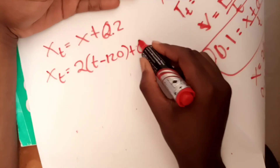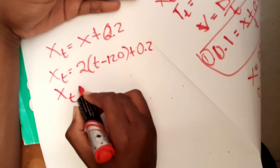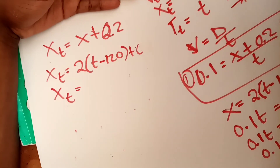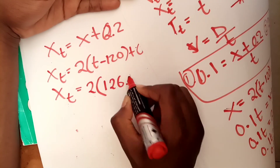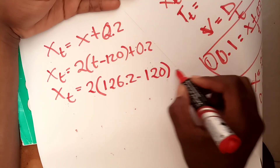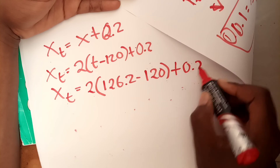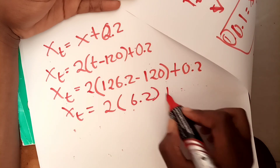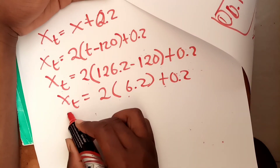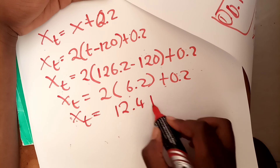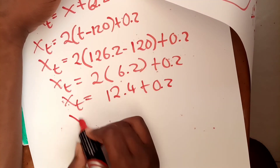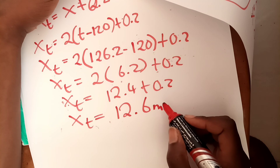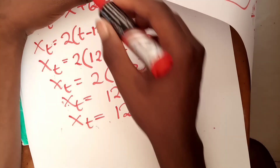Substituting t equals 126.2 seconds: x equals 2 times (126.2 minus 120) plus 0.2. That gives 2 times 6.2, which is 12.4, plus 0.2 equals 12.6 meters. So the total length of the race is 12.6 meters. That completes question 4.